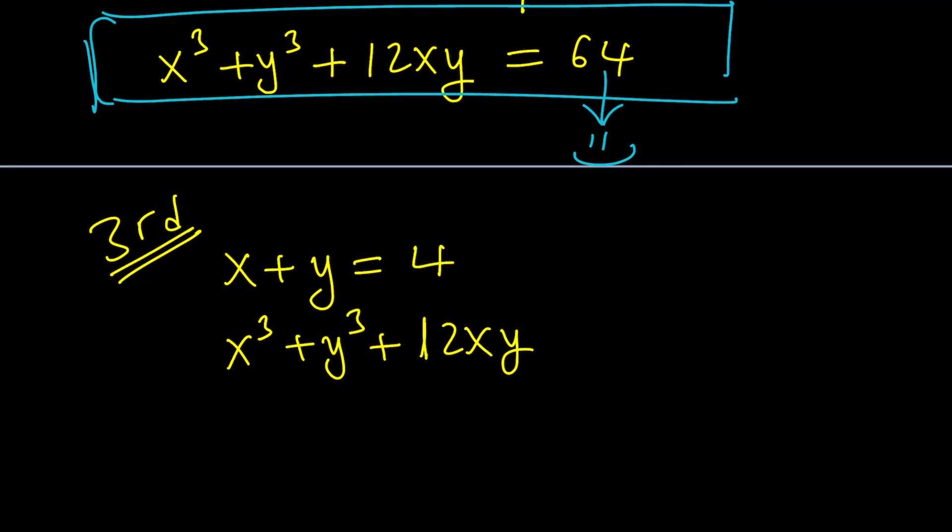We're trying to evaluate this expression based on the first given equation. Since I'm looking for a numerical value, the particular values of x and y should not matter. Don't you think? If x and y are any values, as long as their sum is 4—because that's what matters—why not use x = 4 and y = 0? Let's try it.